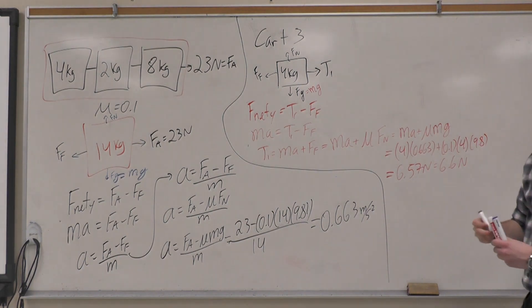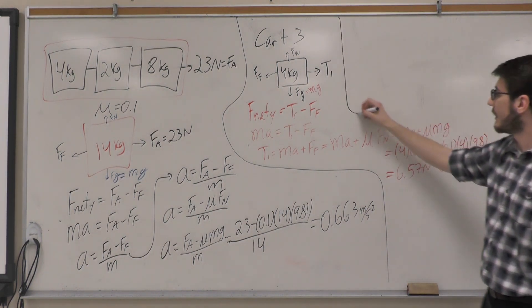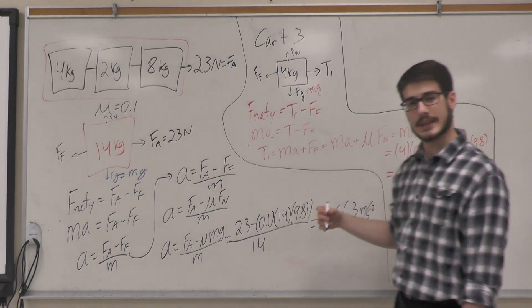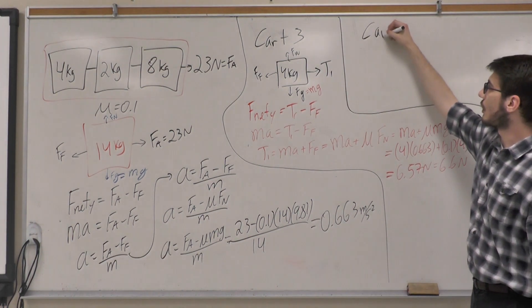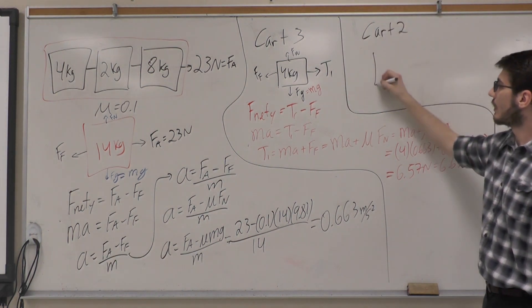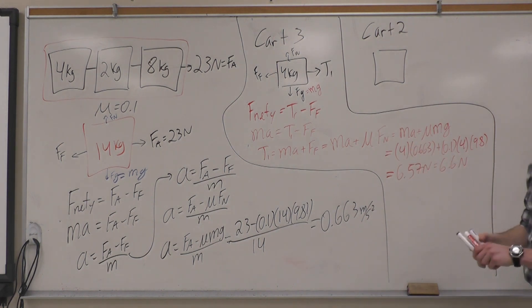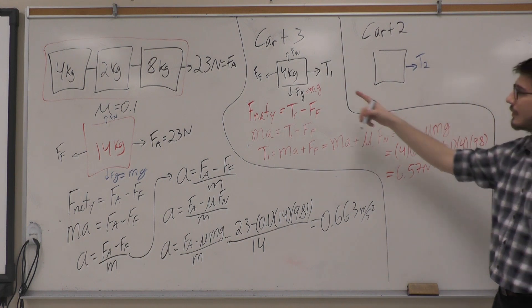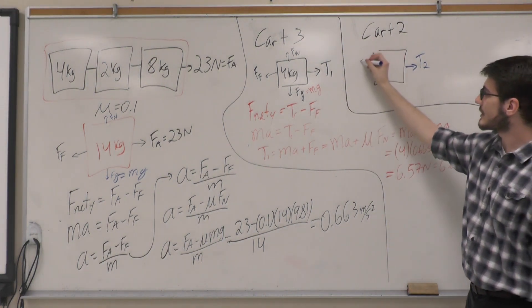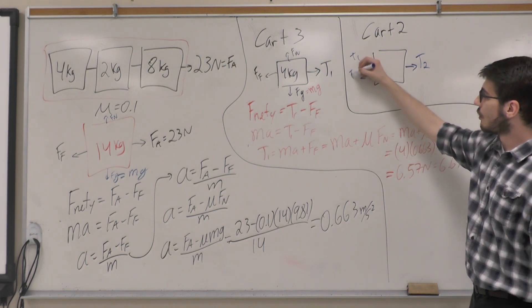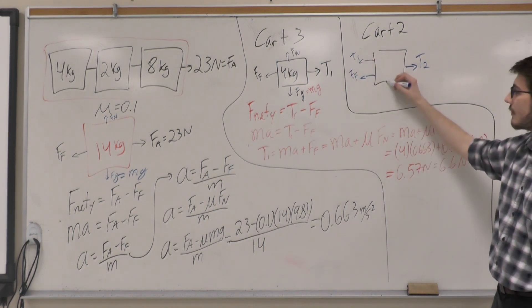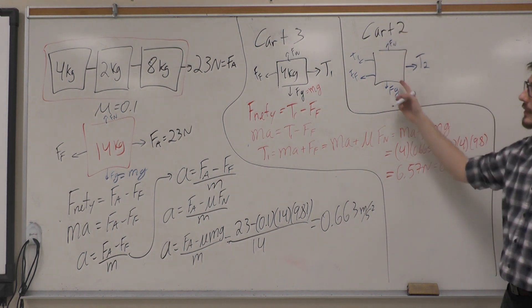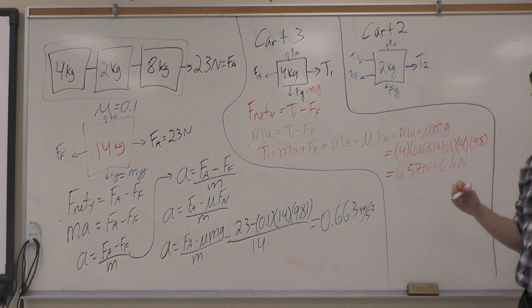If we continue with this logic, we can solve once again for the middle cart. The idea being the same, except there's now different variables present. So if we look at cart number 2, we have tension which we'll call tension 2. Tension 1 is present, but this time it is pulling back the cart with force of friction. Force of gravity and force normal are present. In total, this cart only weighs 2 kg.